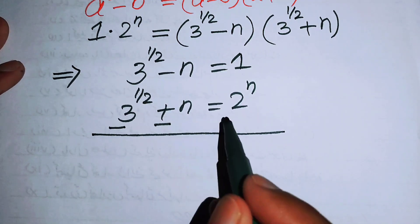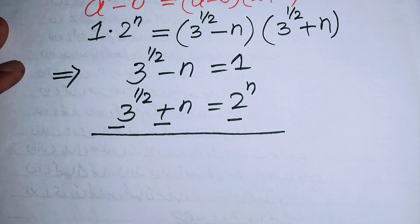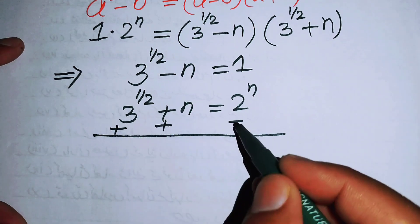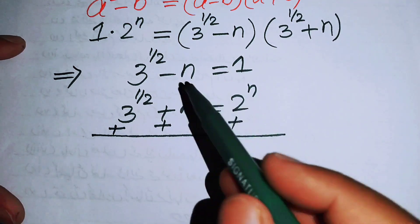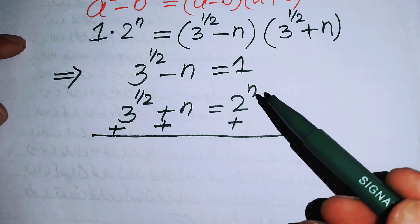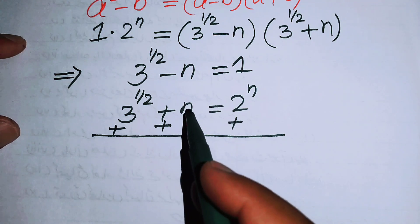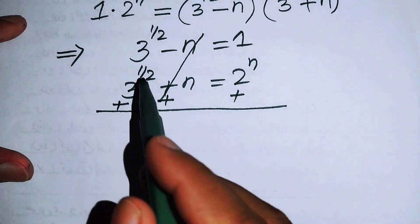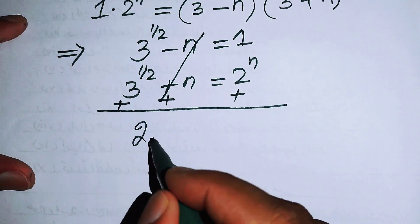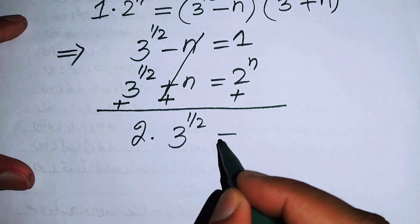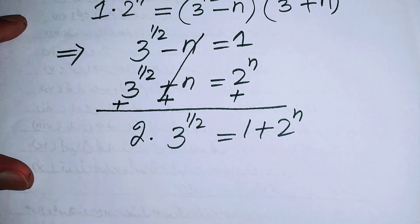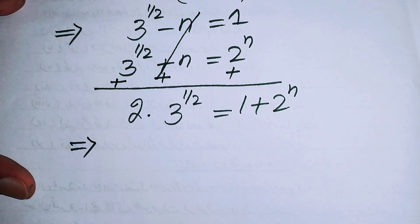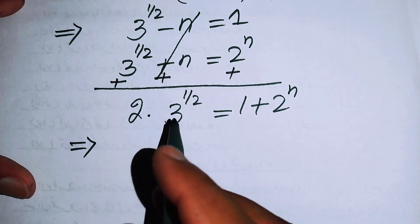Now, instead of subtracting, we add these two expressions to eliminate n. Adding them cancels out the n terms, giving us 2 times 3 to the power of 1 over 2 equals 1 plus 2 to the power of n.